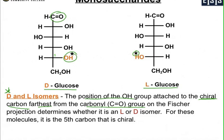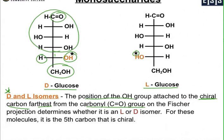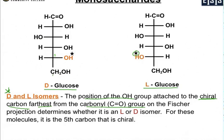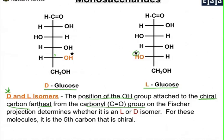Carbon number five is the farthest carbon away from the carbonyl that has four different groups attached to it: the OH is different from the H, which is different from the CH₂OH, which is different from the rest of the structure. The final carbon — the CH₂OH — has two hydrogens, so it doesn't have four different groups. Carbon number five is your farthest chiral carbon, and this is true for glucose, galactose, and fructose.